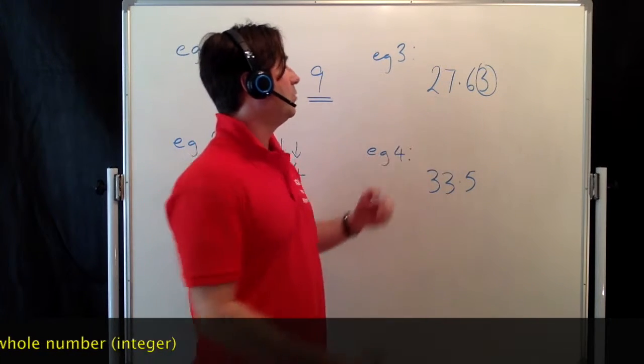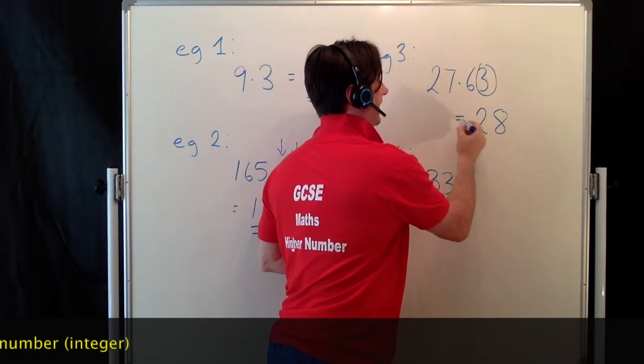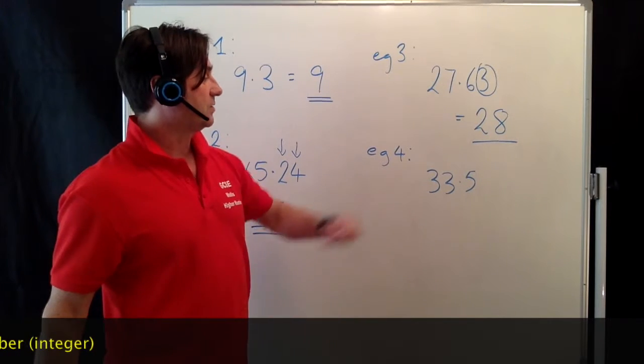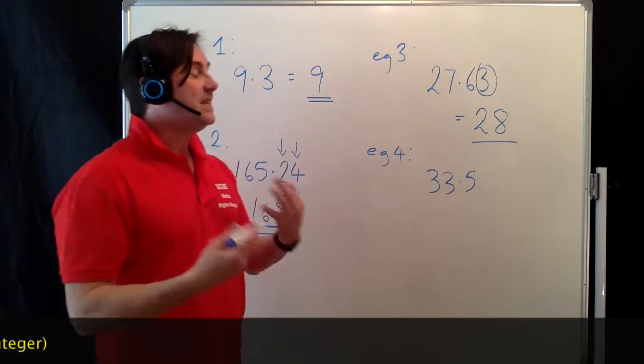And finally, the last one, 33.5. 5 is right in the middle. We know that if you've got a 5, we always round up.